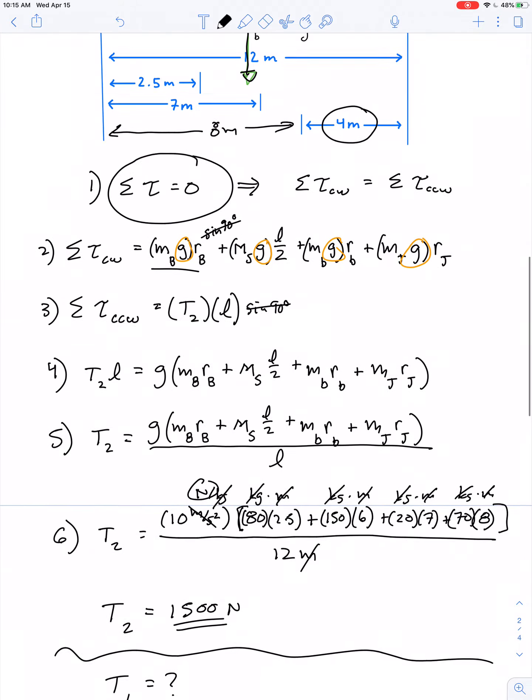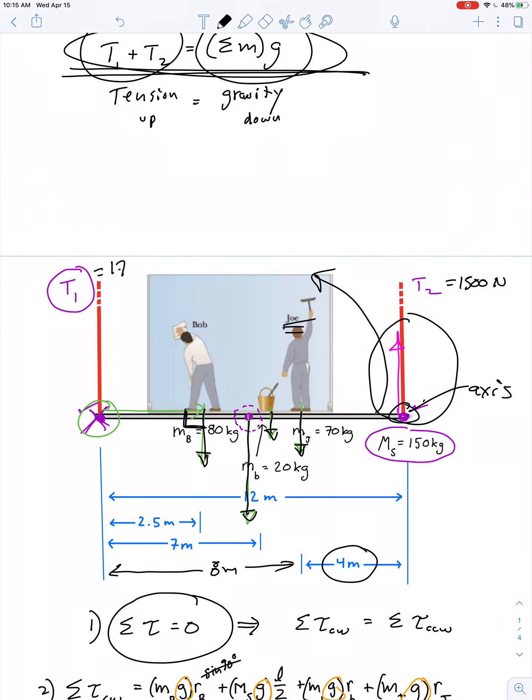Now is that reasonable? Why is the tension in the left greater than the tension on the right? Bob is standing closer to the left side and is a little bit heavier, and Joe is standing farther from the right side and he's a little bit lighter. So it makes sense that the tension in the left side would be a little bit stronger.